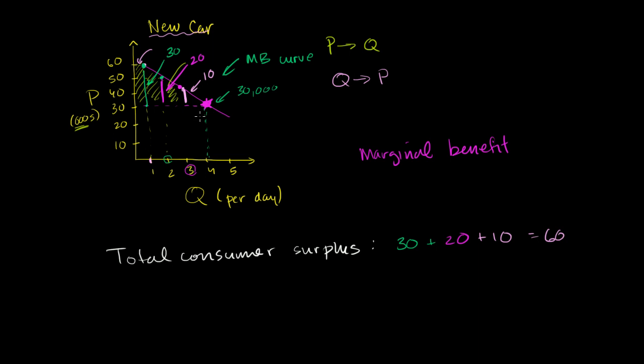So in this scenario, in that week, the consumers would get $60,000 more in benefit for them, in perceived benefit for them, than what they actually had to pay for it. And if you think about it, it's a little unideal for the seller, because they were selling something at a lower price than maybe what they could have gotten from at least these first few consumers here. And that was because they just really, based on the model that we have here, they just had to set one price.